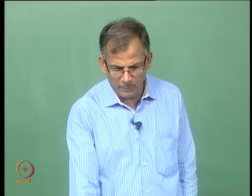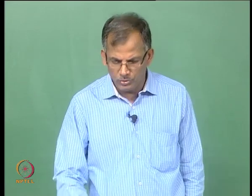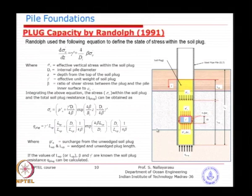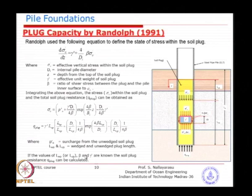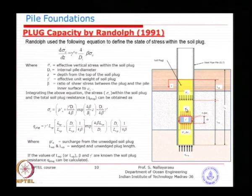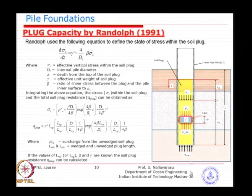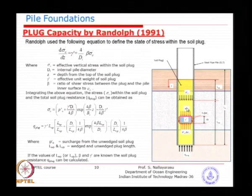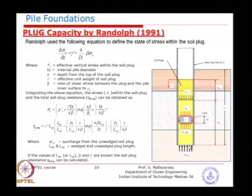Today we will evaluate the capacity of the file plug, so that we can determine what is the end bearing capacity we can limit. As proposed by Randolph, he has integrated the internal vertical pressure and arrived at the limiting capacity, which will be either the frictional capacity plus the weight of the soil, or the plug capacity determined depending on the soil at the base.